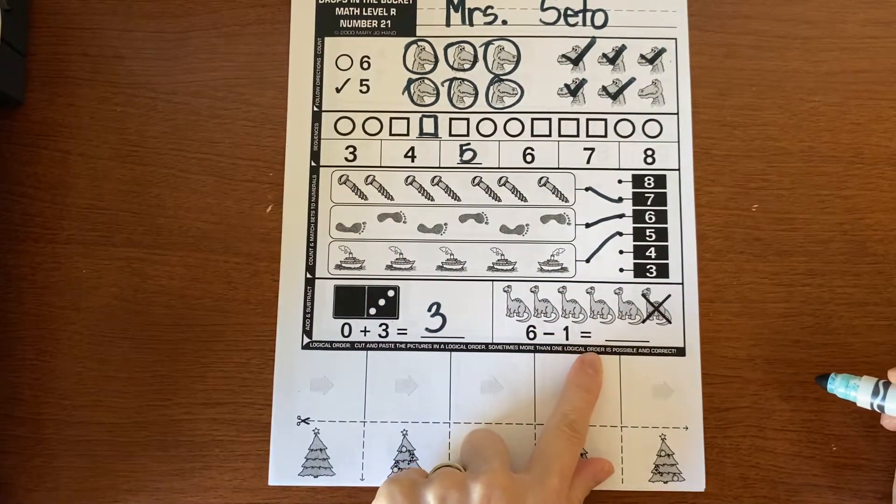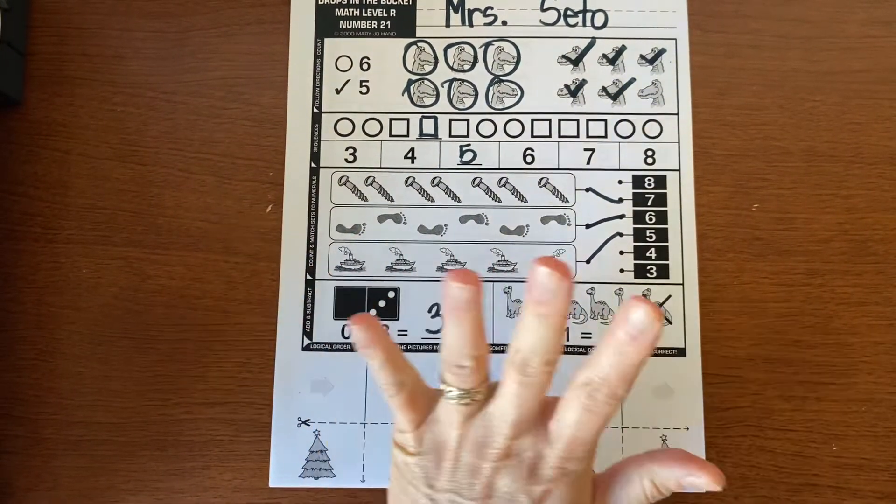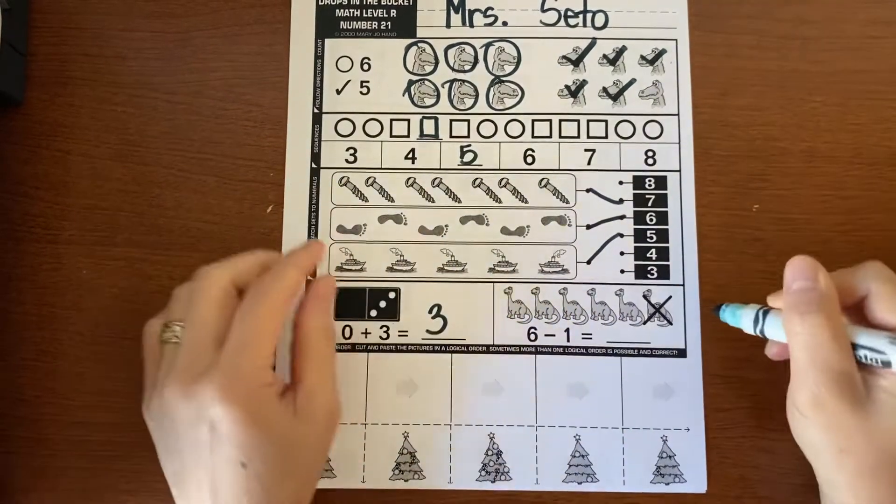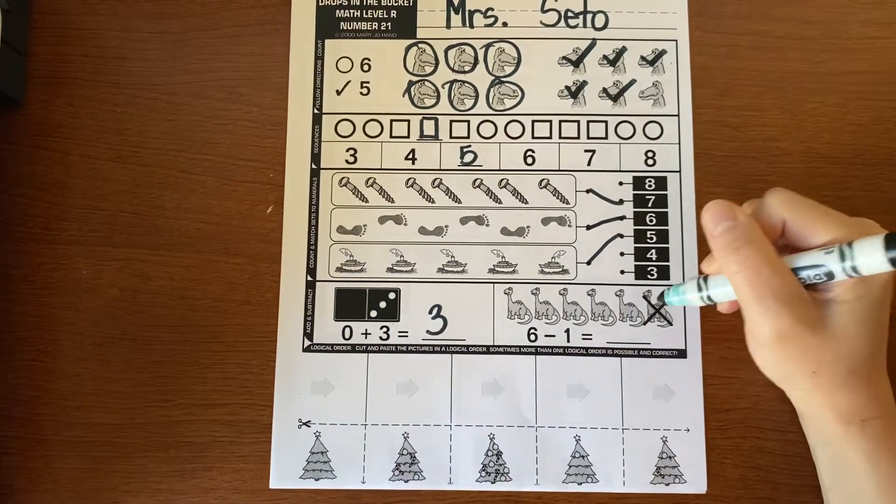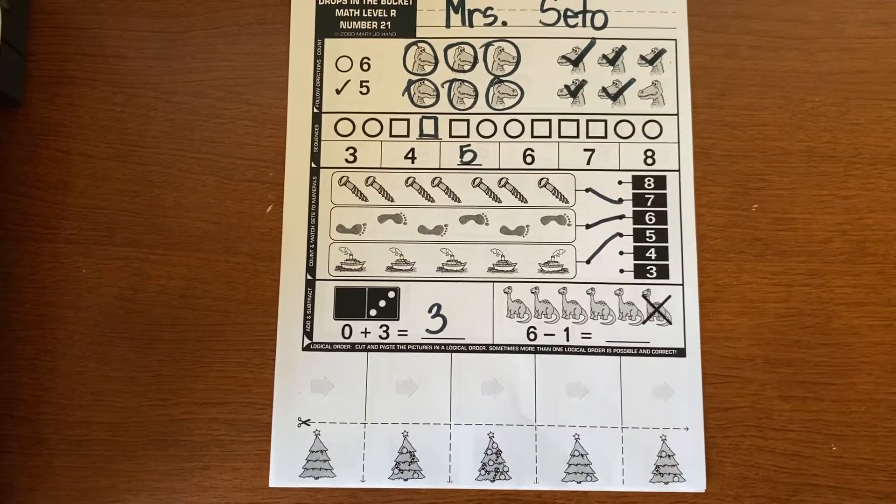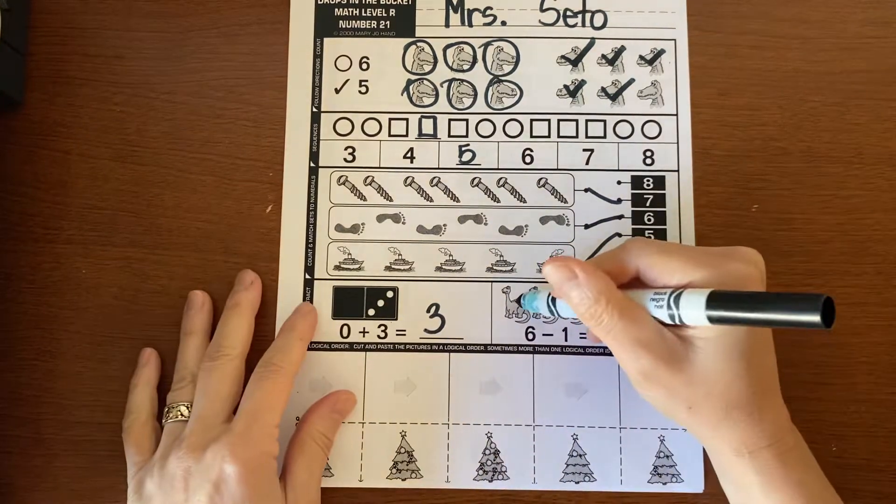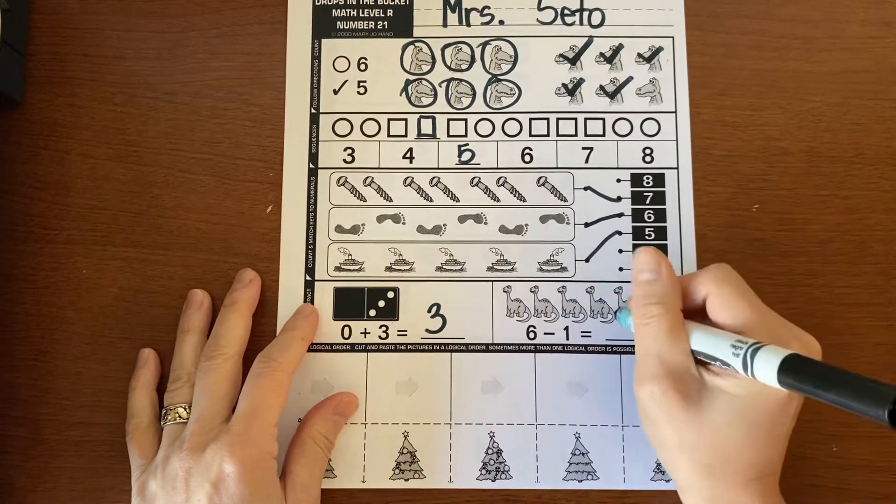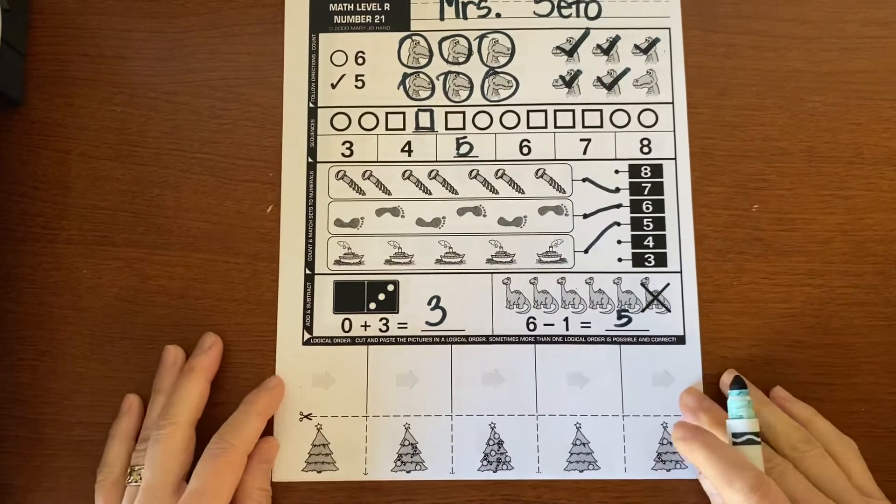Six minus one equals. So if I have six and I take away one, or I can count the dinosaurs that are not crossed out because they have six dinosaurs and then one dinosaur left. So it's one, two, three, four, five. So six take away one equals five.